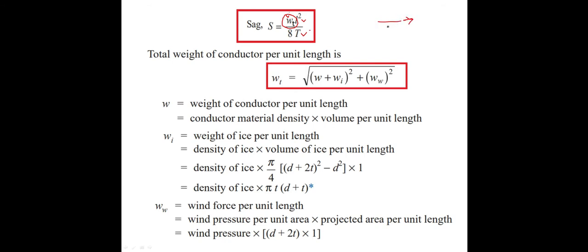This comes from the SAG diagram — wind force is horizontal, weight of conductor and weight of ice are in the downward direction. Taking the resultant using Pythagoras theorem gives this equation. All weights must be in kg per meter. Weight of the conductor is given directly in kg per meter. Only Wi and Ww need to be found using formulas.